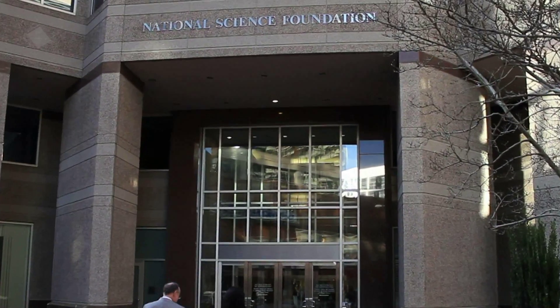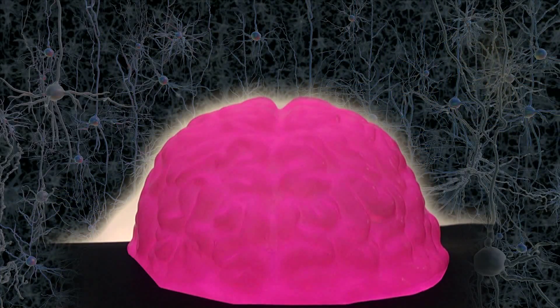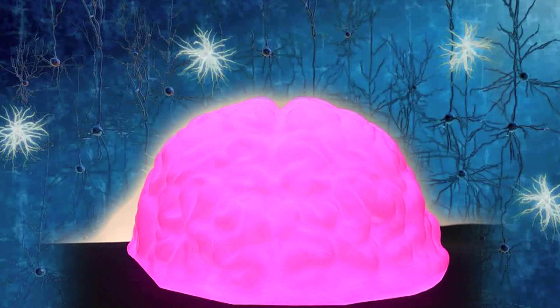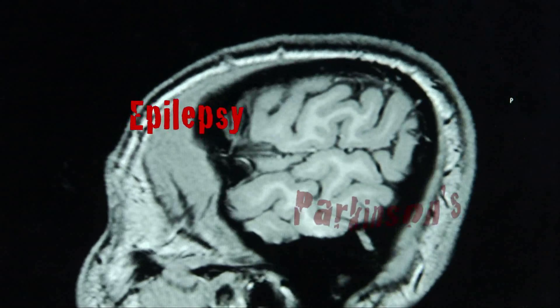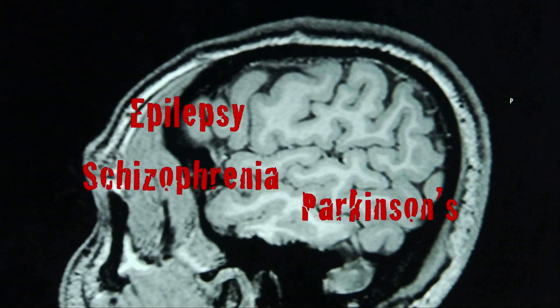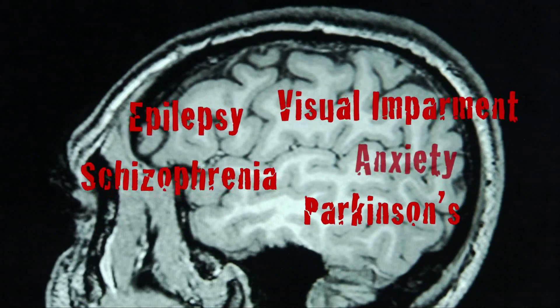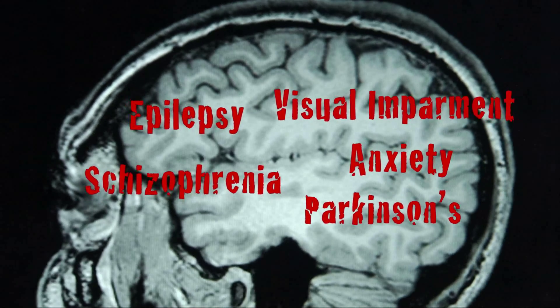Developed with funding from the National Science Foundation, optogenetics is being used around the world to study neurons possibly involved in epilepsy, Parkinson's, schizophrenia, visual impairment, anxiety, and many other diseases and disorders.